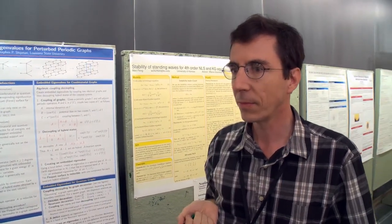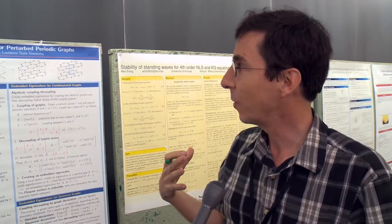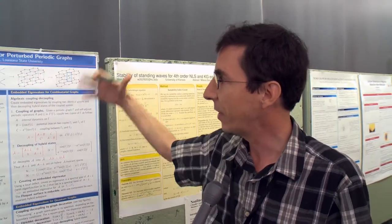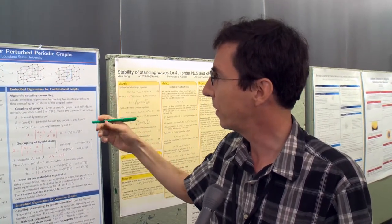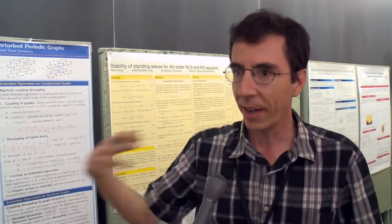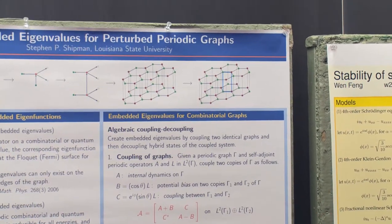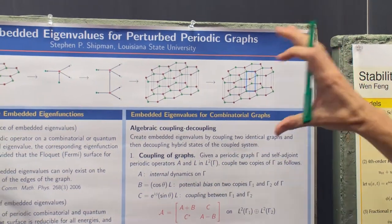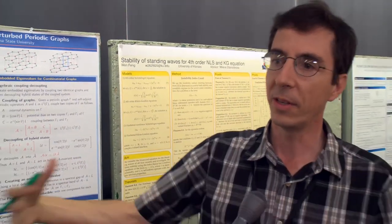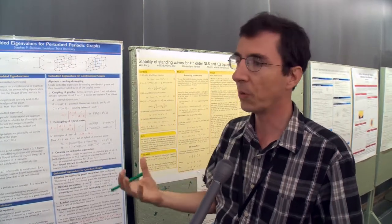Graphene has lots of interesting properties people care about. One is how electrons can travel through it as if in free space. The interaction with resonance — the resonance between radiation and trapped energy — is actually used in lots of photo-electronic devices. I can't say anything specific about that in relation to graphene, but that's how I think about these problems. My role is really trying to understand carefully what the mathematics behind it is, and eventually I'll understand some of the physics better.